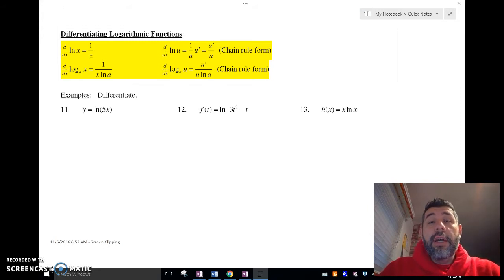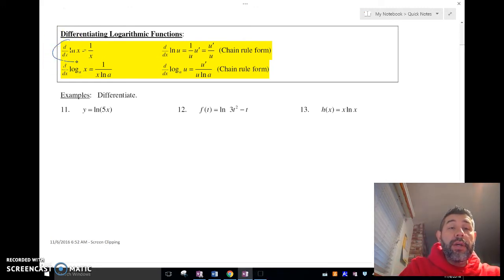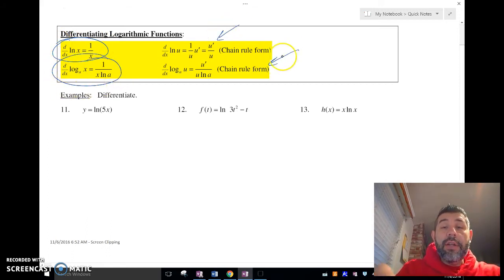I'm going to go over a few examples of just using the differentiation formulas for logarithms here, and I have them here on the screen. You'll need to at least memorize these two. These two right here are just the chain rule formulas, so you just got to remember that you do the derivative of the inside. You do the derivative of the whole thing and then multiply it by the derivative of the inside. This one right here is by far probably the most important: the derivative of ln(x) is 1 over x. Let's take a look.